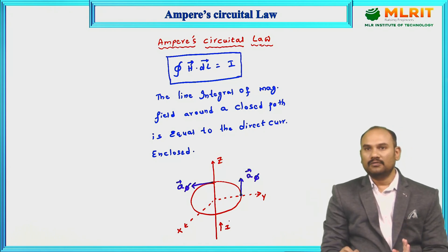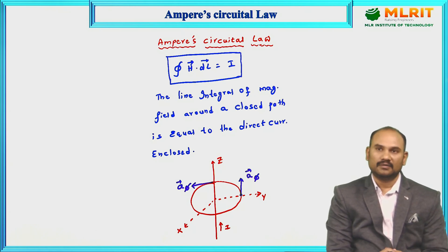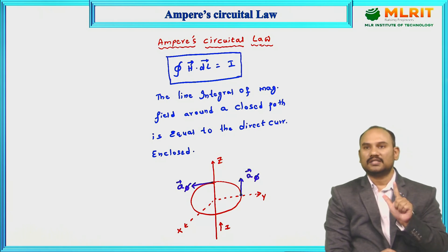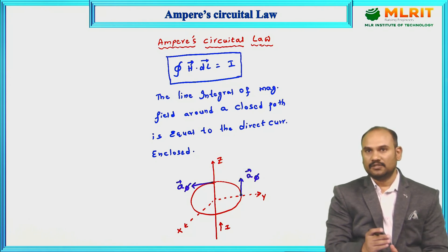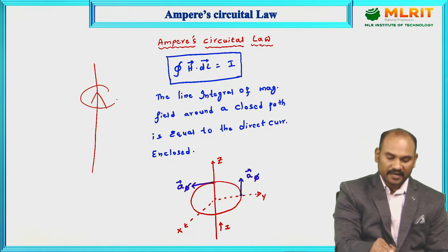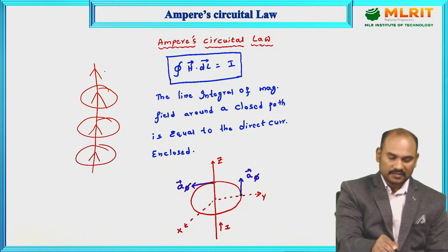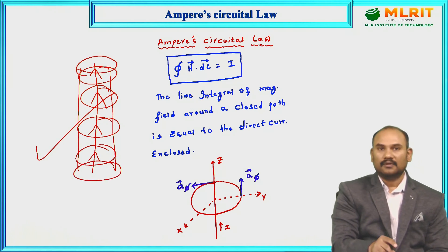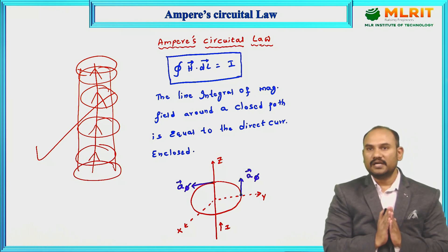We must follow one of the coordinate systems. In EMTL we encounter either Cartesian, spherical, or cylindrical systems. Since the magnetic field surrounds the conductor in a circular path — forming a cylinder — we use the cylindrical coordinate system. The shape traced by the magnetic field around the current is nothing but a cylinder, so cylindrical coordinates are appropriate here.